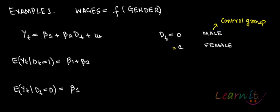Now you will have this regression with you: Yt equals beta 1 plus beta 2 times Dt plus ut. When dt equals to 1, this model becomes Yt equals beta 1 plus beta 2 plus ut.